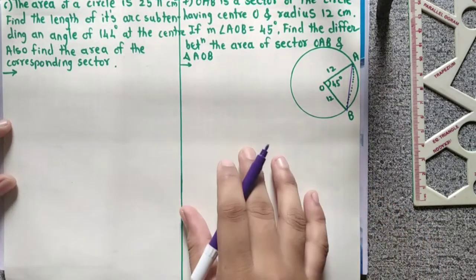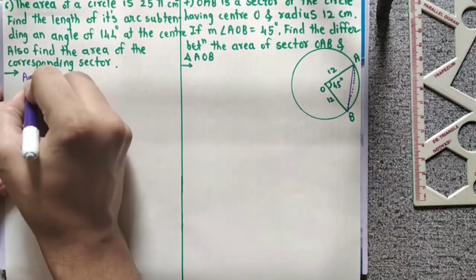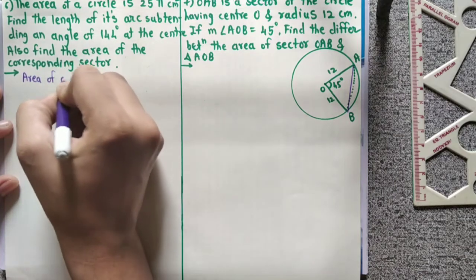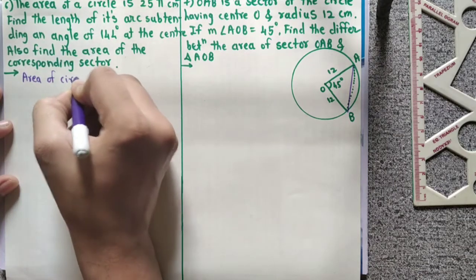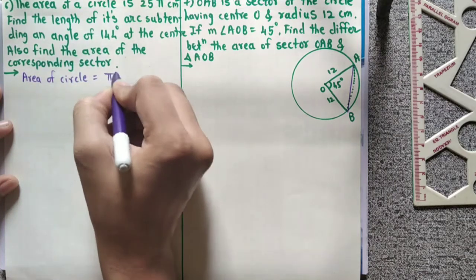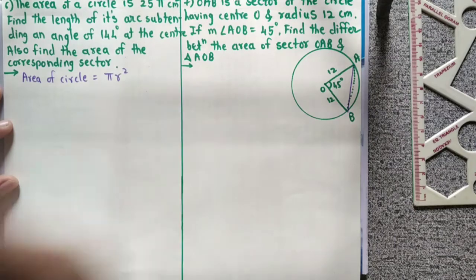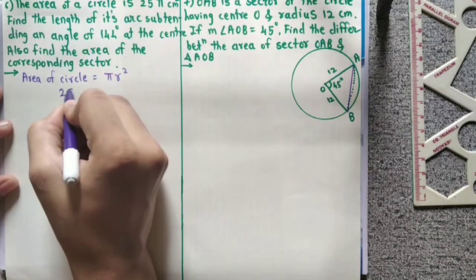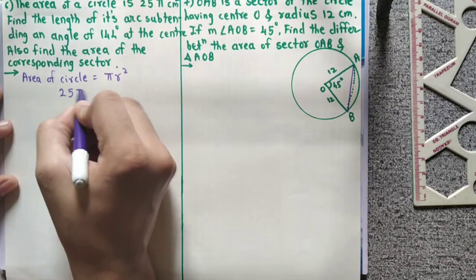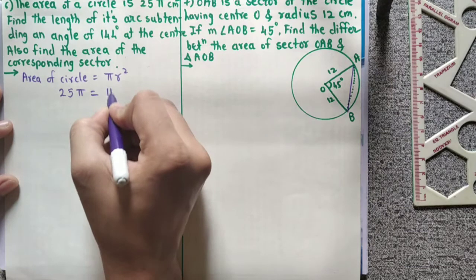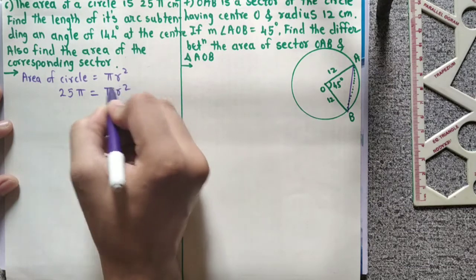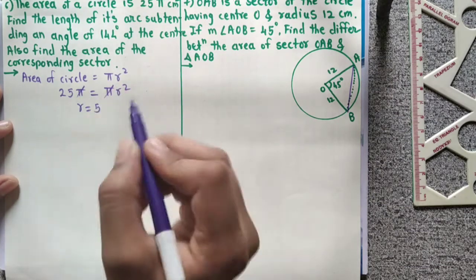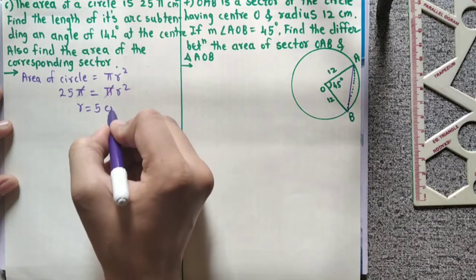The area of the circle is given. The formula for area of a circle is pi r square. Area equals 25 pi. Pi r square equals 25 pi, pi cancels, so the value of R is 5 cm.